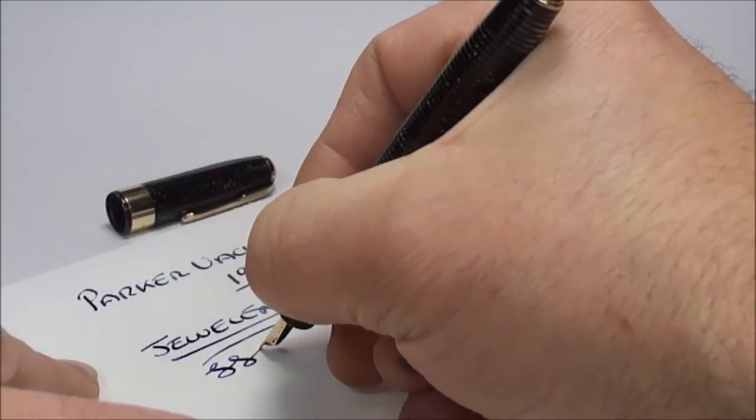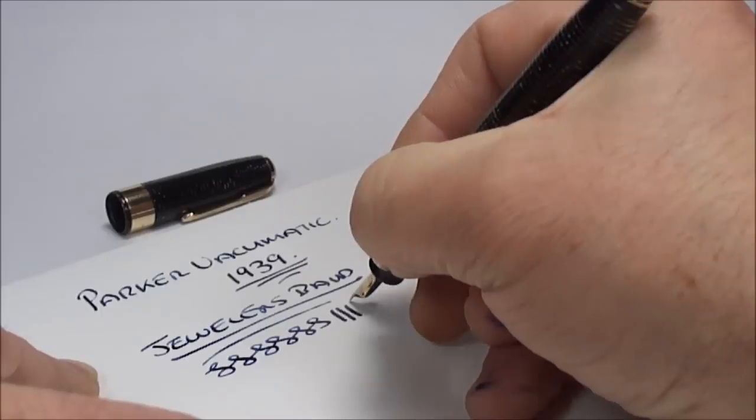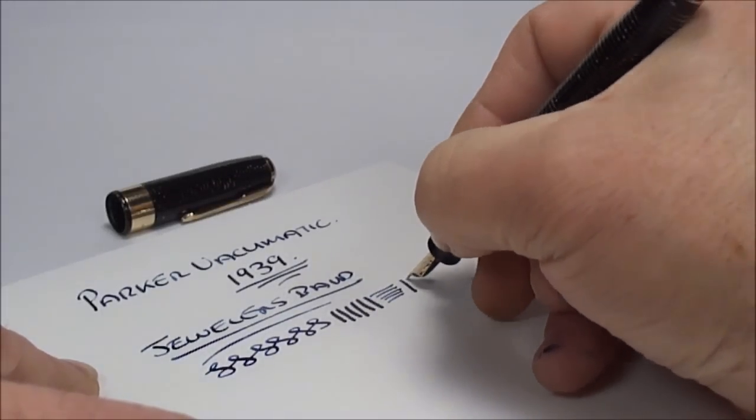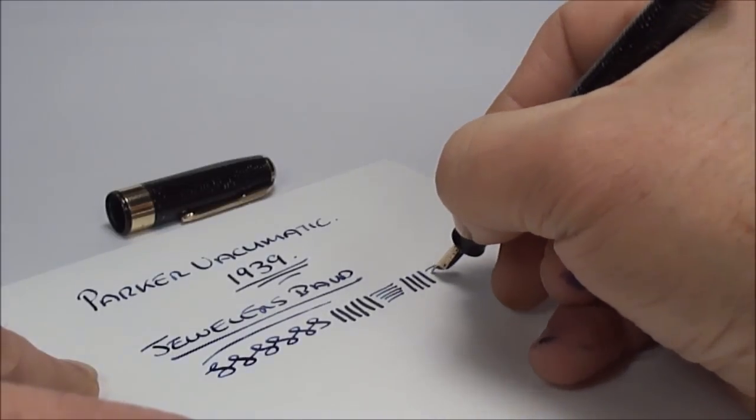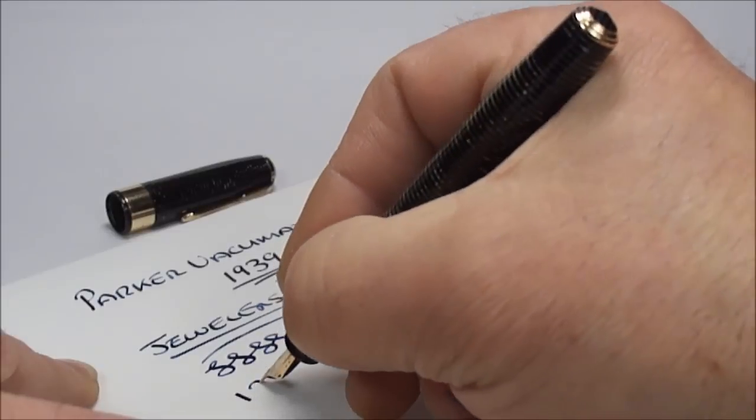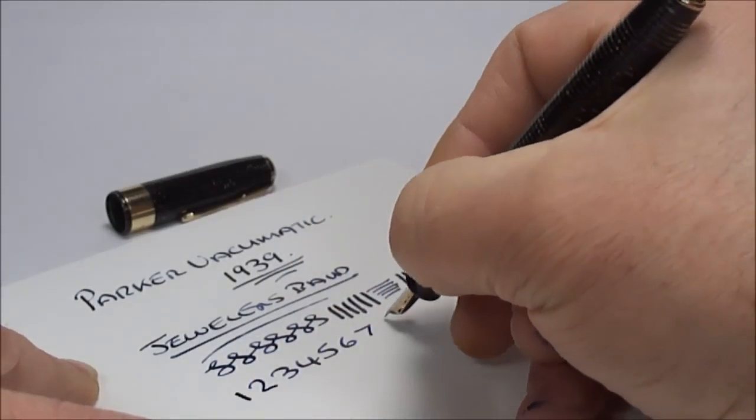And what it actually has is this jeweller's band to the cap. And if we do some figure of eights, you can see, on the downward stroke, we're getting quite a nice thick line. On the cross stroke, quite a thin line. So, a very nice variation. It writes very smoothly. It's a beautiful writer.